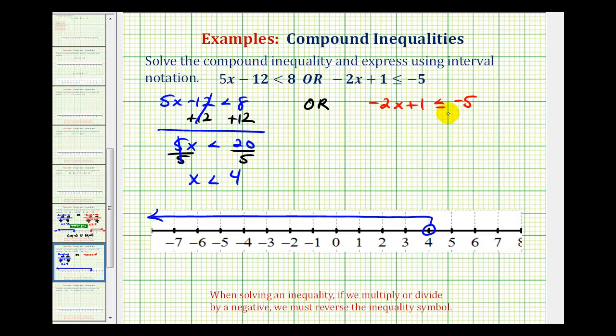Now we'll go ahead and solve the red inequality. So we'll start by subtracting 1 on both sides. This would be 0, so we have negative 2x is less than or equal to, this would be negative 6.